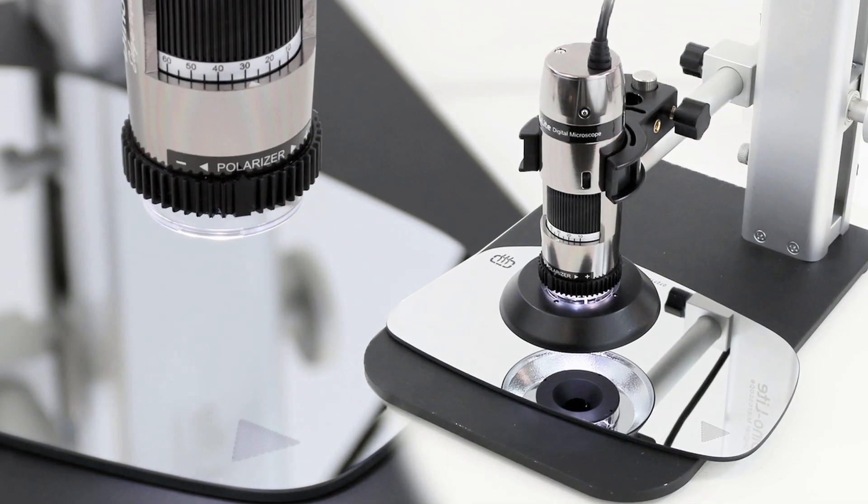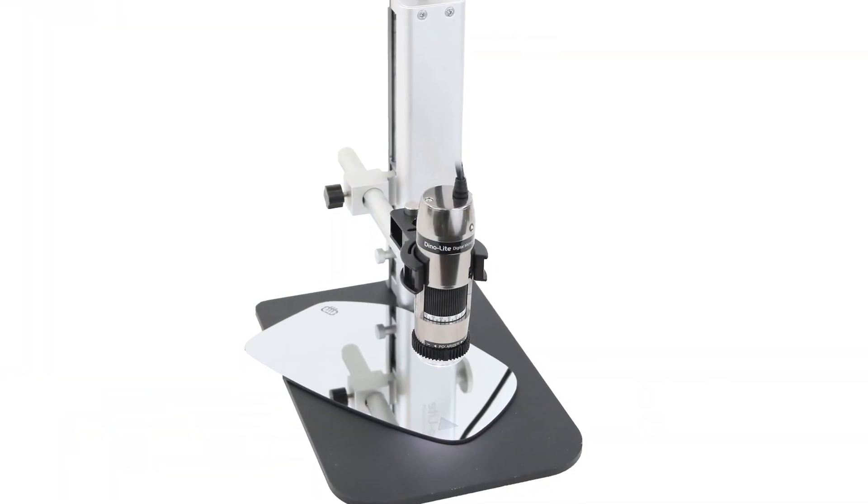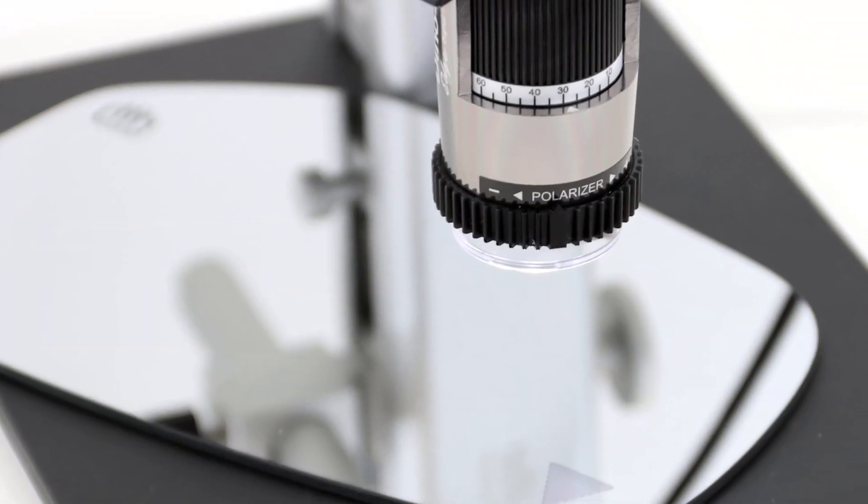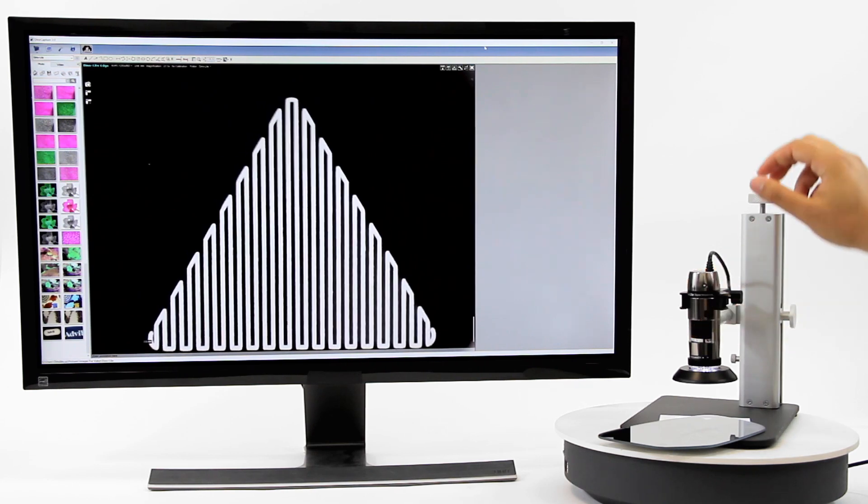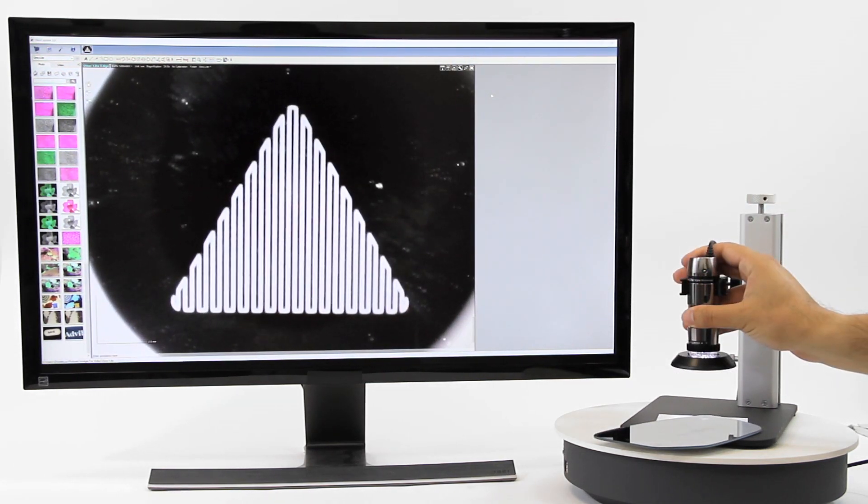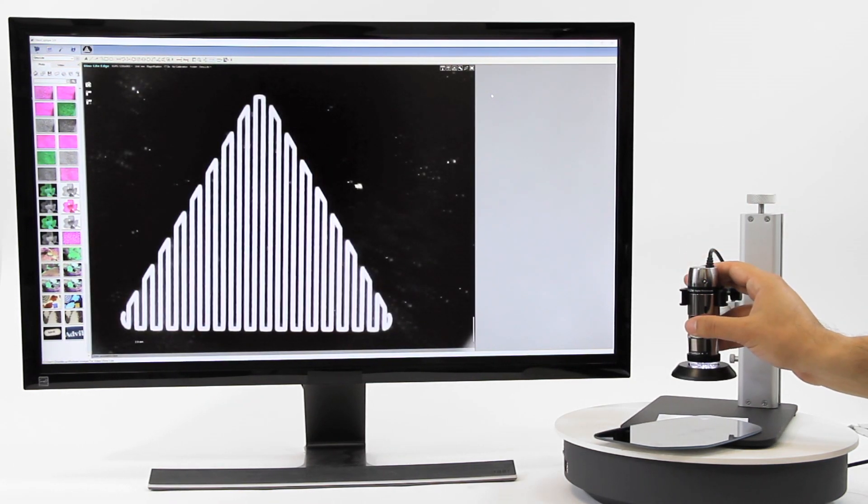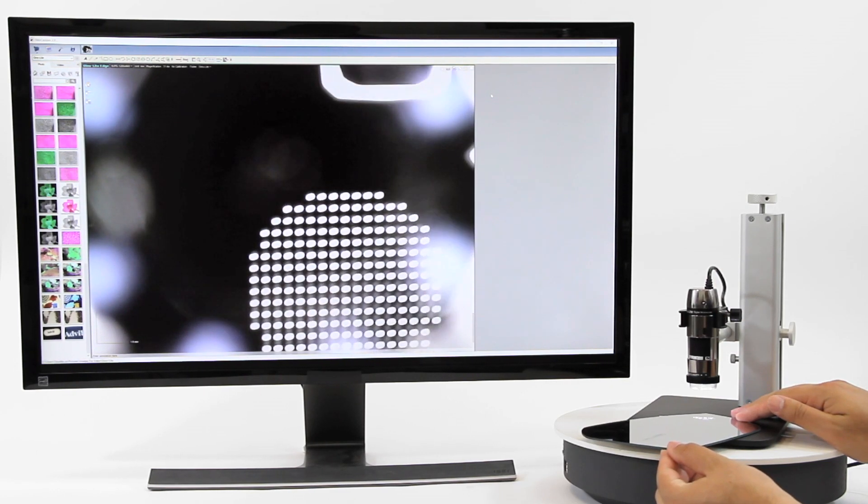In this video, we'll show you the best ways to view mirrors using Dino-Lite Edge Series microscope cameras. For larger fields of view, we recommend the N3CR ring light to help evenly illuminate and provide clearer images.